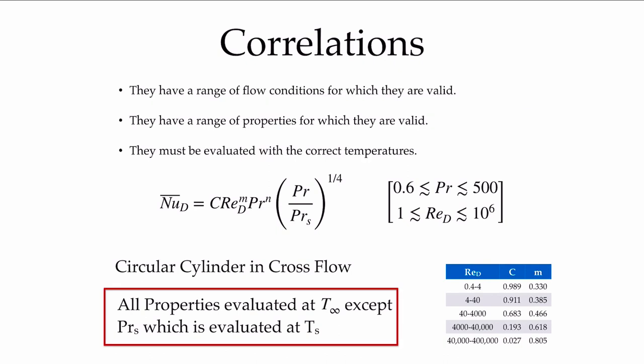You'll also notice that there's a particular temperature at which you have to evaluate the properties. When you calculate a Reynolds number, you'll have to use the kinematic viscosity. The Prandtl number is a property that you'll look up as well. This particular correlation is instructing you to evaluate all properties at T-infinity, except for Pr_s, which appears here, which is to be evaluated at the surface temperature.